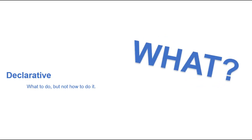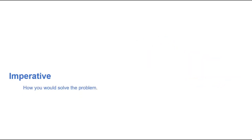Programming-wise, the declarative is information that describes what to do, but not how to do it. And the imperative is how you would solve the problem.